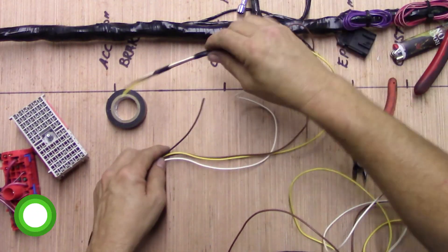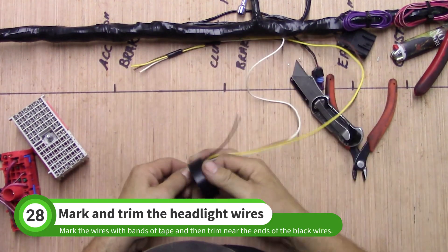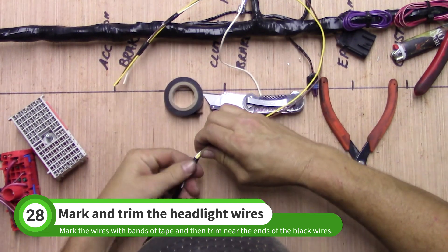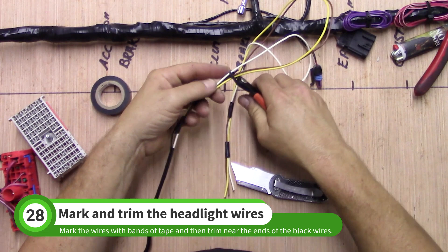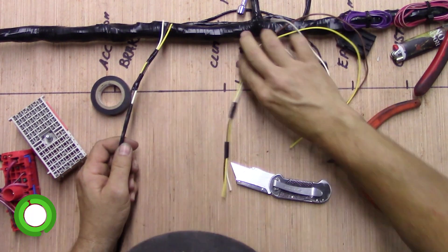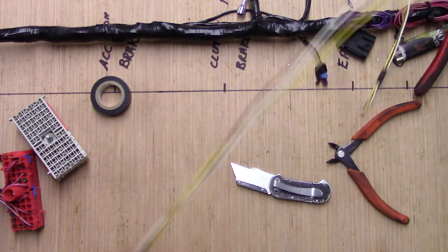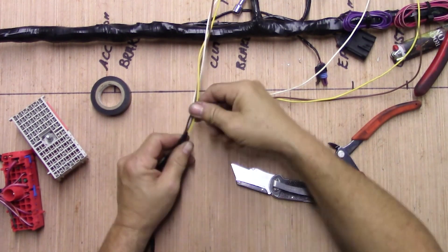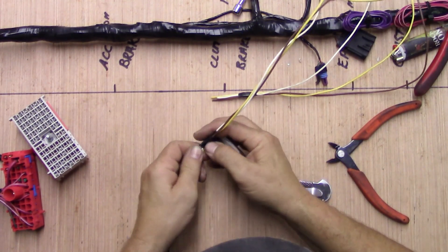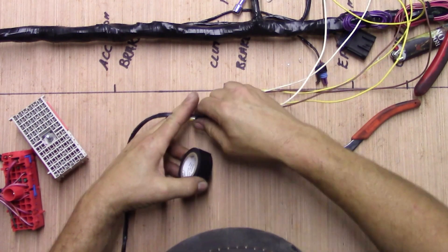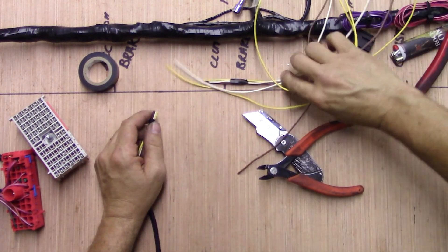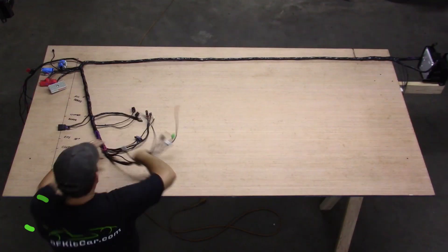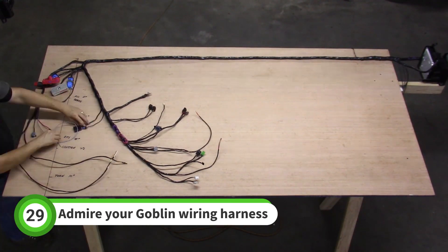Next, you'll trim the headlight wires flush to the ground wires. Before cutting them, mark the ends with strips of tape. At this point, your Goblin wiring harness is ready to go.